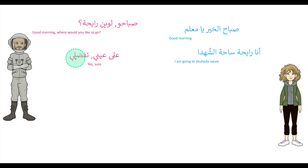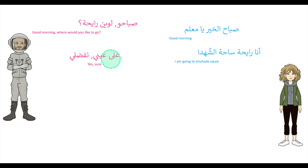عالعيني تفضلي — عالعيني literally means 'on my eyes.' تفضلي means coming in. So عالعيني is one of these untranslatable phrases; the literal translation is 'on my eyes' but the overall meaning is 'you're welcome, come in.'